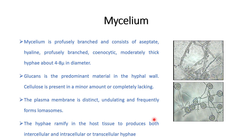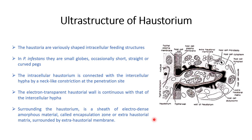This fungus produces both intercellular and intracellular hyphae. On the intracellular hyphae, structures known as haustoria are produced for the absorption of nutrition. Formation of haustoria takes place mostly in parasitic members for absorbing nutrition from the host.